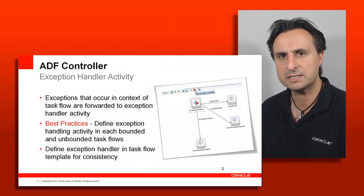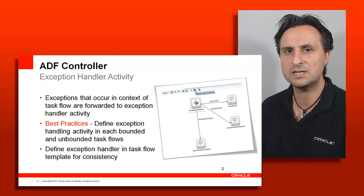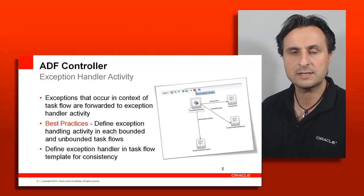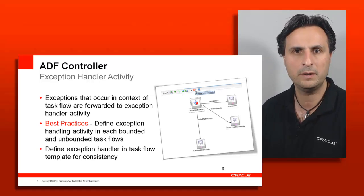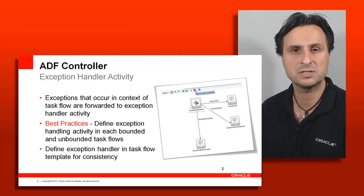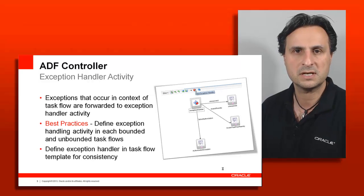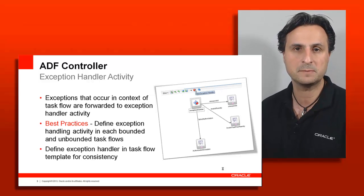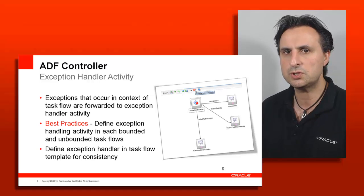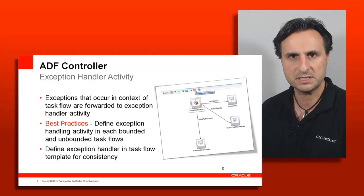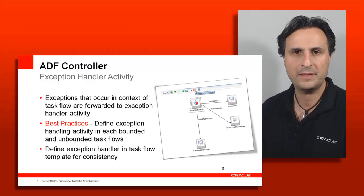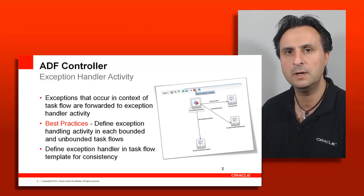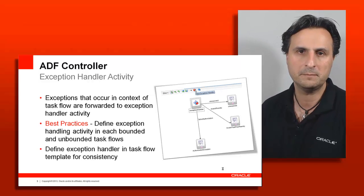Best practice is to always handle exceptions on the bounded task flow level — every bounded task flow really should have an error handler. The reason is that if you have nested task flow calls, say task flow 1 calling task flow 2 and so on, and further down in task flow 4 there is an unhandled exception, it will all bubble up to task flow 1. While it's handled there, from the user's perspective you're taking them out of context and they won't see the page where the problem actually occurred. Best practice is to work on a strategy: use a task flow template that defines the error handling capability so that every bounded task flow has a consistent way of dealing with exceptions. Then decide based on the use case whether that should be a view activity, method activity, or router activity.